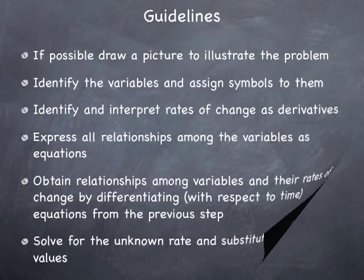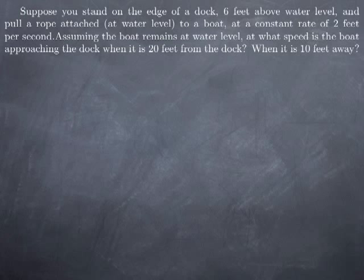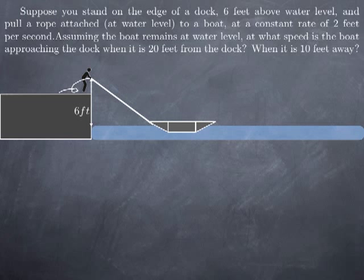Let's look at one more example. Suppose you stand on the edge of a dock that is 6 feet above water level, and you pull a rope that is attached at water level to a boat at a constant rate of 2 feet per second. We want to know at what speed the boat is approaching the dock when it is 20 feet from the dock, and also when it is 10 feet away. You might think that pulling the rope at a constant rate means the boat moves at a constant speed — we will see that this is not the case. Analyzing the text, pulling the rope at 2 feet per second is the rate of change of the length of rope between the boat and the man pulling.